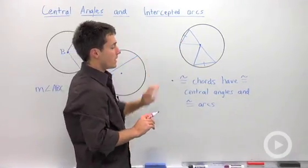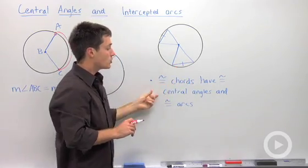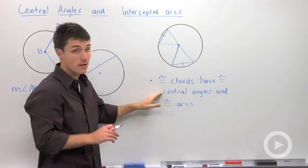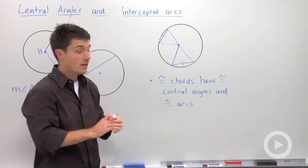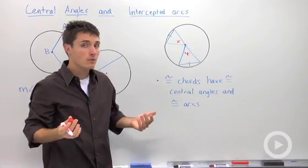If we look at congruent chords in a circle, so I've drawn two congruent chords, I've said two important things: that congruent chords have congruent central angles, which means I can say that these two central angles must be congruent. And how could I prove that?